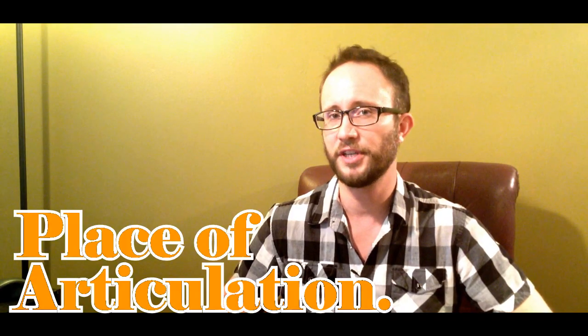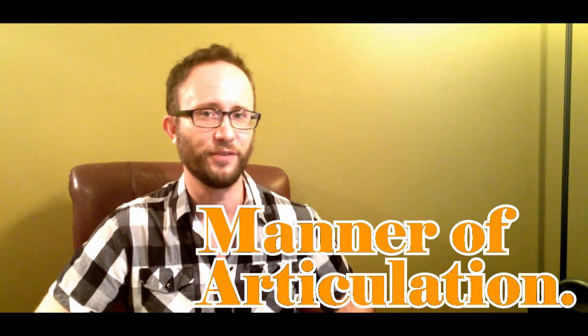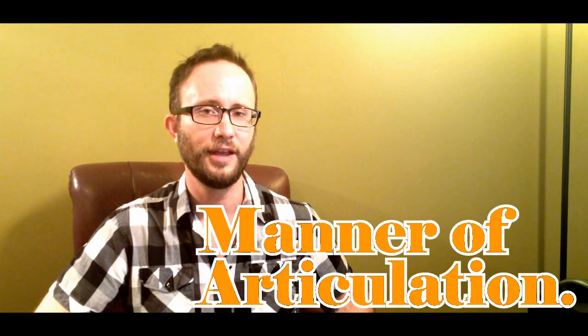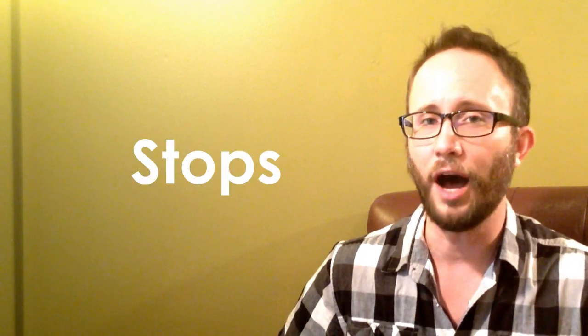So those are the different places of articulation in English, and places of articulation correspond to the different columns in the IPA chart. Next we have manners of articulation, which correspond to the different rows in the IPA chart. The first manner of articulation we need to know about are stops.